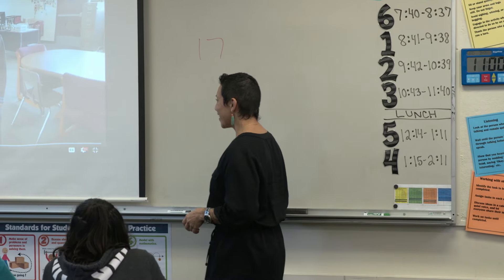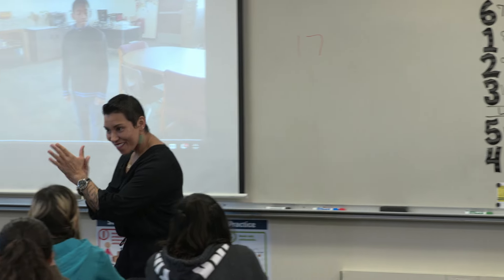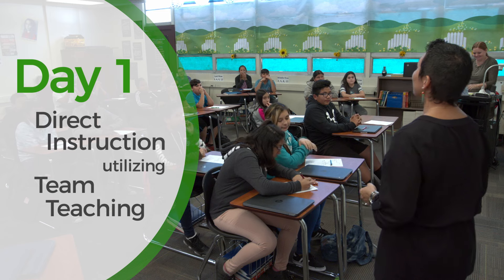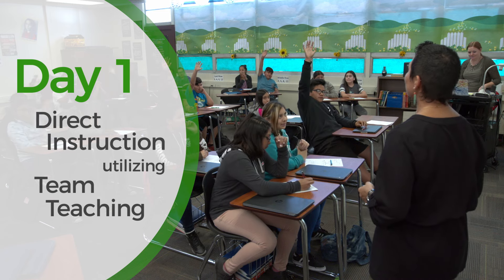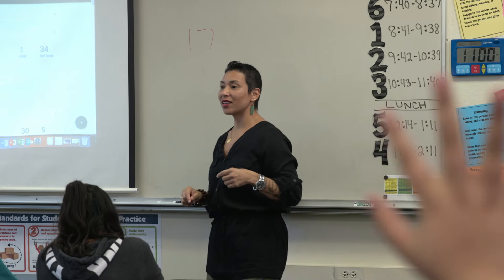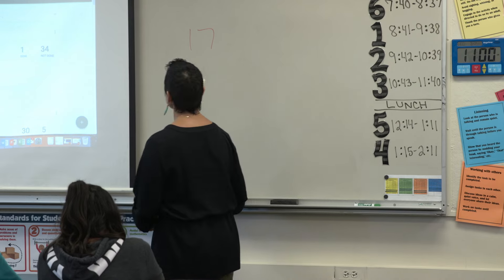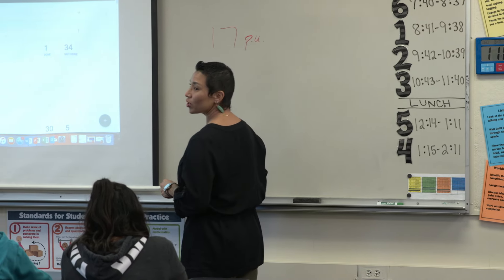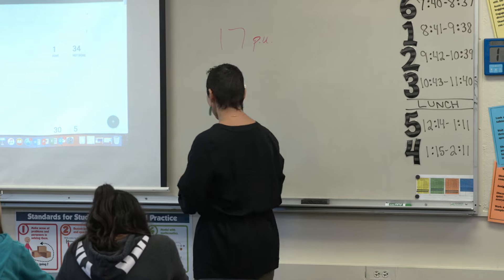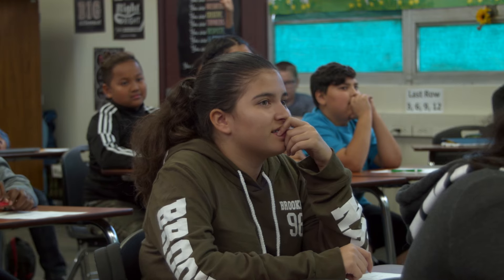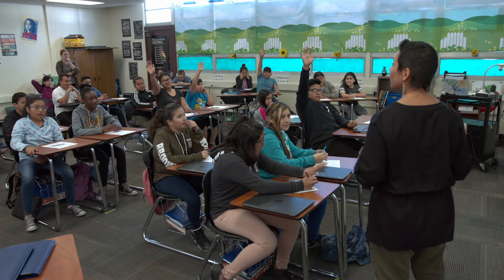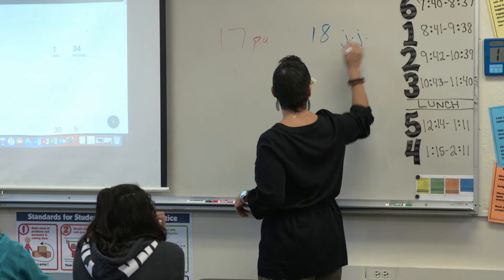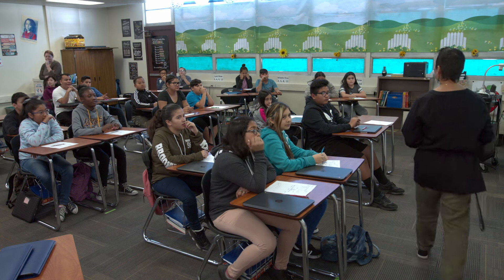How many push-ups can Jake do? Clayton — 17. I'm going to put PU for push-ups. Can somebody tell me how many jumping jacks Adam did? Alfonsina — 18. I'm going to put JJ for jumping jacks.